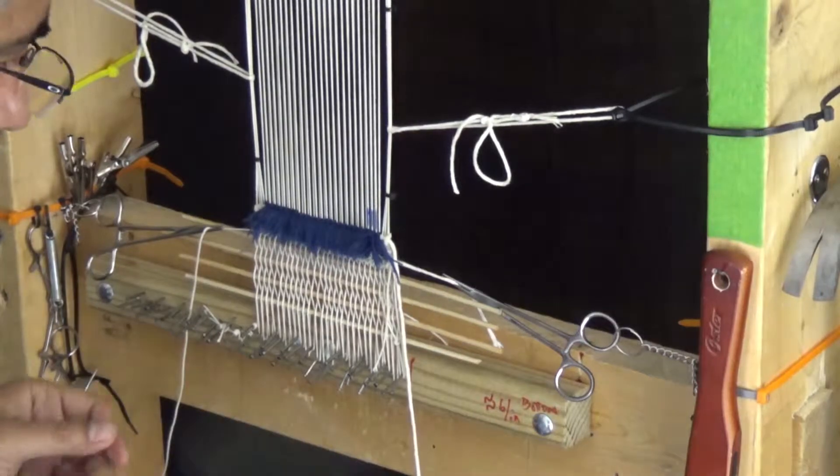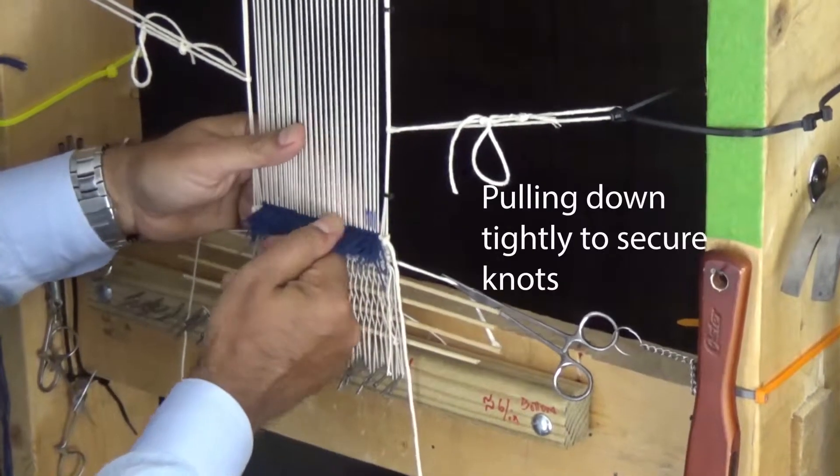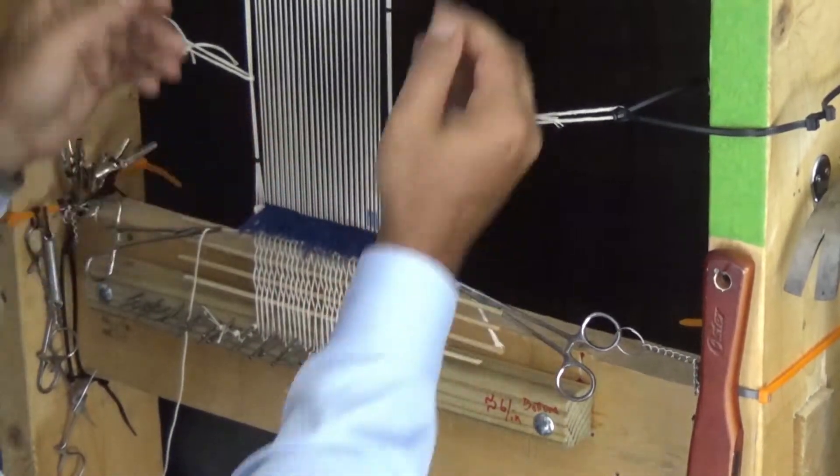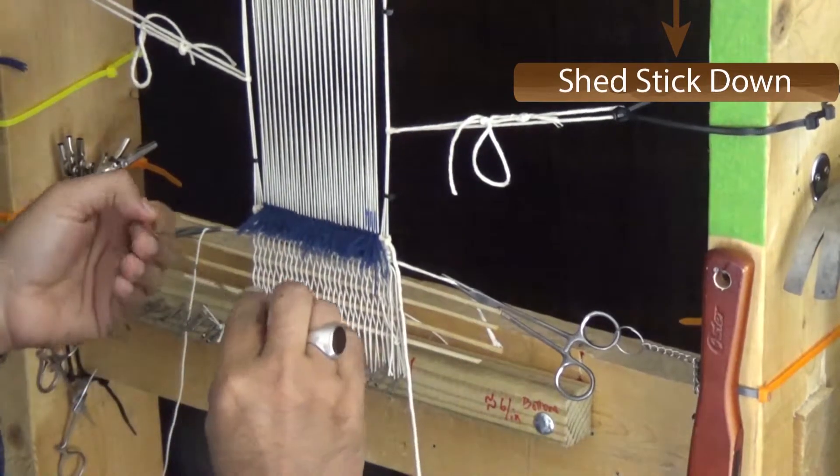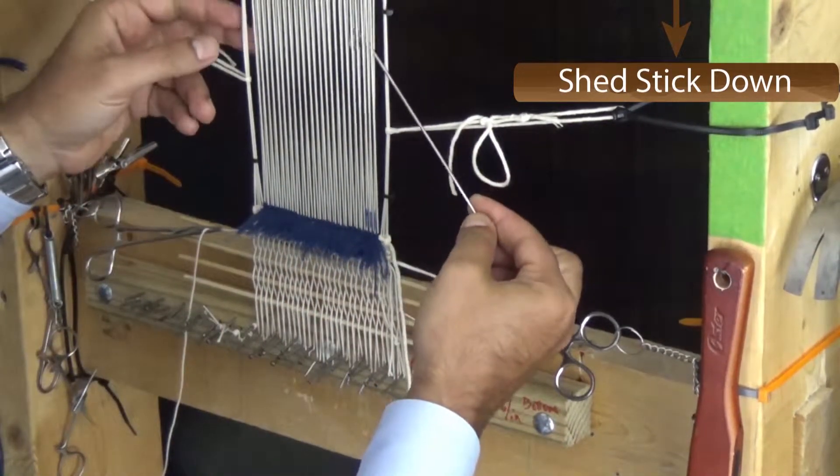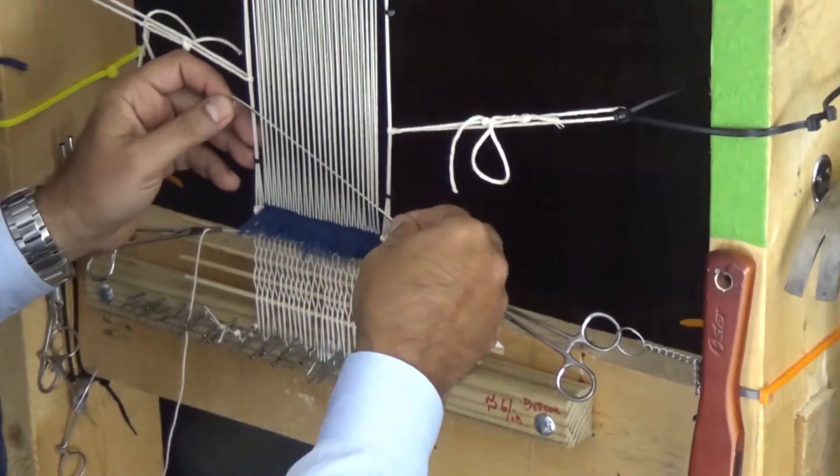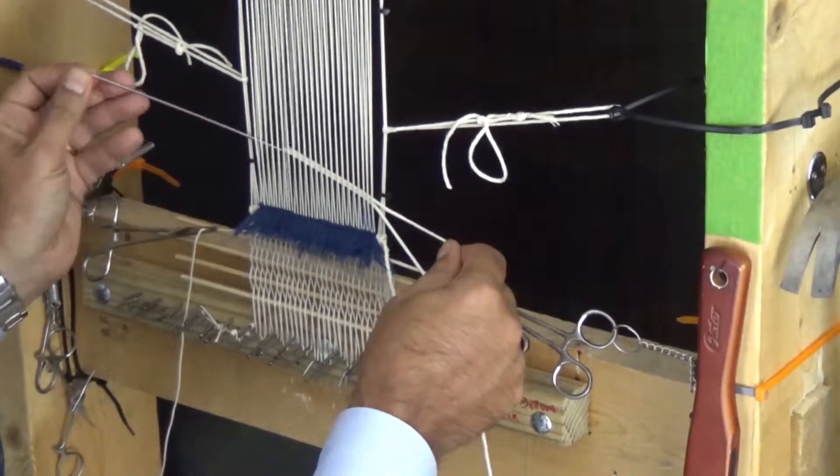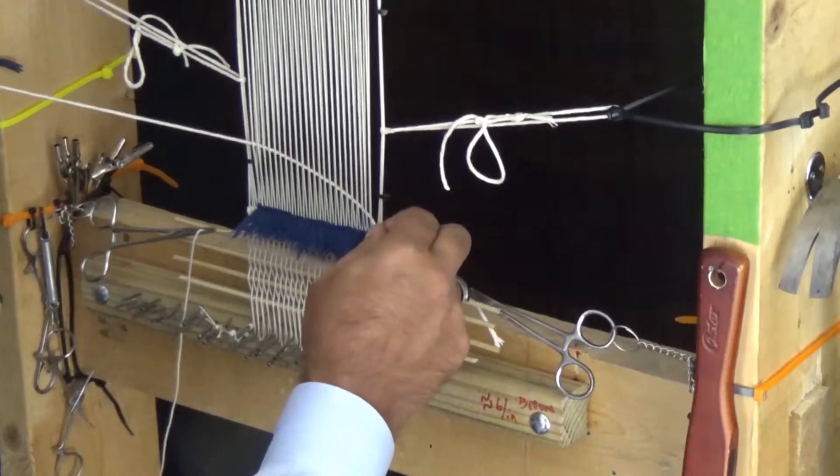Once the row of knots is complete, we'll add a weft to keep the knots secure. Notice that the interlocking of the warp and wefts will keep the entire row secure as we build up, one row at a time.